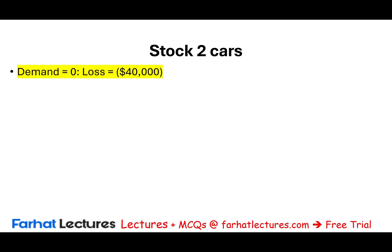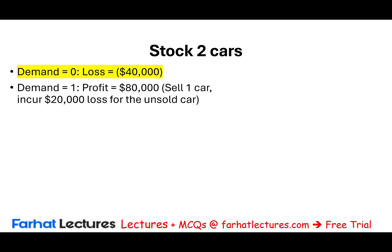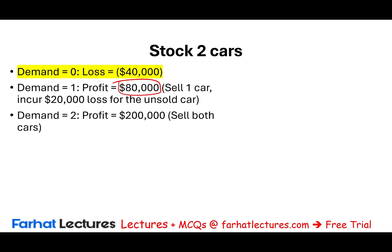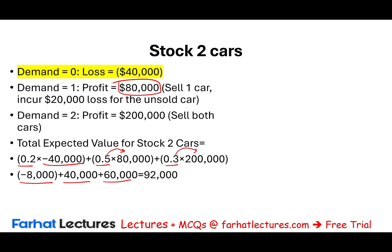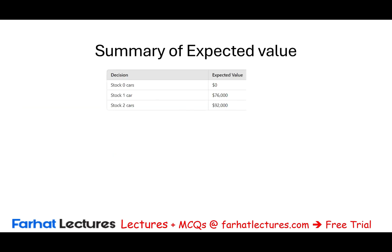If we stock two cars and demand is zero, we pay $40,000 in carrying costs. If one car is sold, profit is $100,000 minus $20,000 carrying cost for the unsold car, netting $80,000. If both are sold, profit is $200,000. Expected value: 20% × (−$40,000) = −$8,000; 50% × $80,000 = $40,000; 30% × $200,000 = $60,000. The expected value for stocking two cars is $92,000. Summary: zero cars = $0, one car = $76,000, two cars = $92,000.